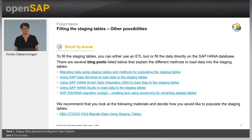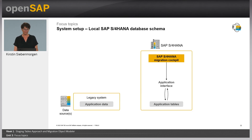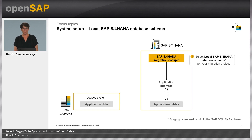We also recommend looking at the knowledge base article with frequently asked questions on this topic. Now let's look at the local SAP S4HANA database schema. On the left-hand side you have your data source — the legacy system with your application data. On the right-hand side is the SAP S4HANA system including the Migration Cockpit. Once you create your migration project and select the local database schema, the staging tables will reside within the SAP S4HANA schema, and will be created for the selected migration objects.